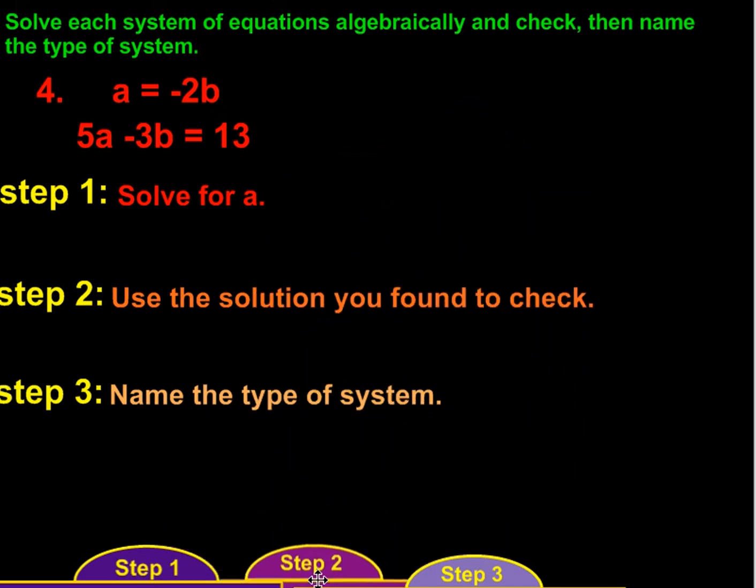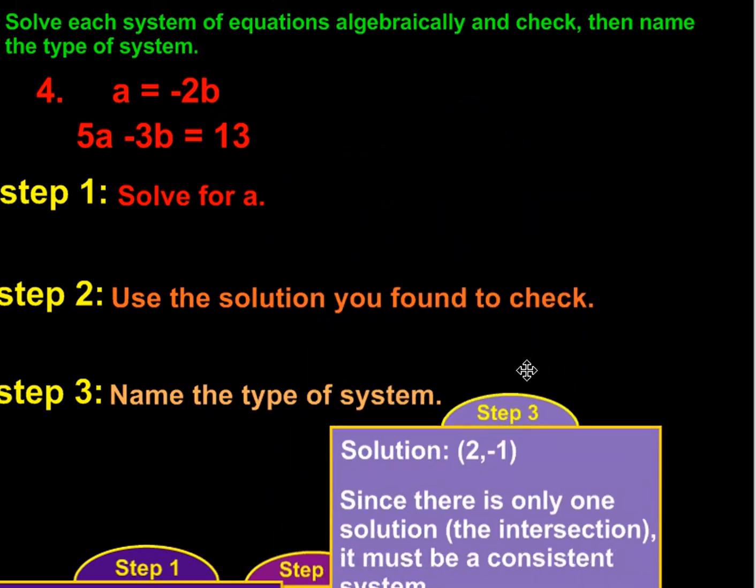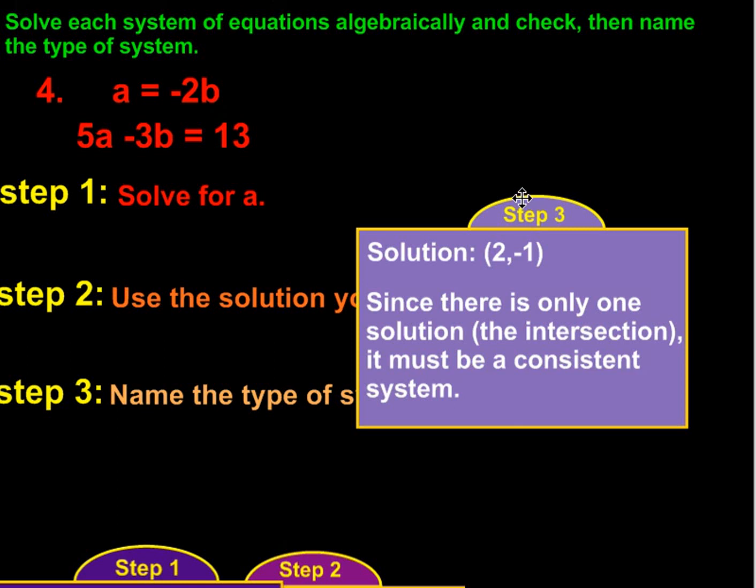And that brings us to the last step, which is determine the system. Once again, there was only one solution. It would be the intersection if we graphed it. And because it has one intersection, or one solution, it has to be a consistent system.